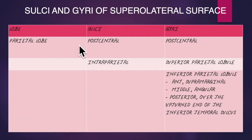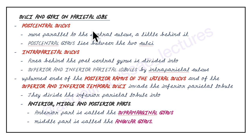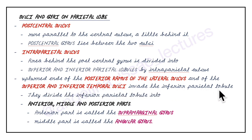To summarize the parietal lobe: two sulci — post-central and intra-parietal; three gyri — post-central gyrus, superior parietal lobule and inferior parietal lobule. The inferior parietal lobule is divided into anterior, middle and posterior parts. The anterior part is the supramarginal gyrus and the middle part is the angular gyrus. The intra-parietal sulcus divides the area behind the post-central gyrus into superior and inferior parietal lobules.